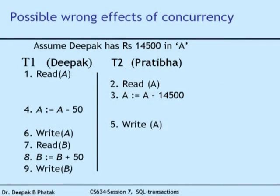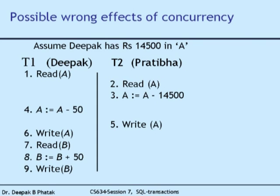Here is an example. Two transactions, T1 and T2. T1 is Deepak — me — and T2 is Pratibha, my wife. Assume I have 14,500 in my account. My wife wants to clean up my account: Read A, A = A - 14500, Write A. I am transferring 50 rupees to a friend's account — a much more noble intention. In the hustle-bustle of millions of transactions on a single server, individual instructions from these transactions get executed at random points in time.